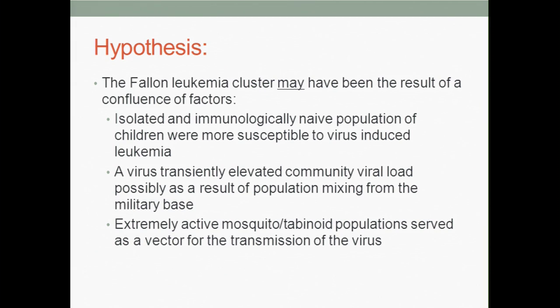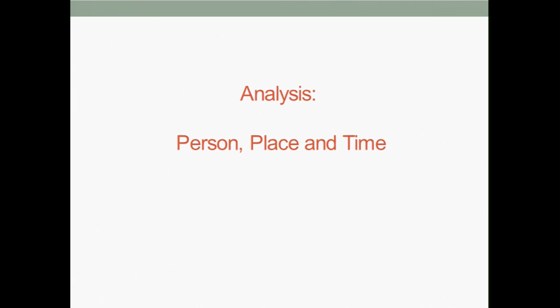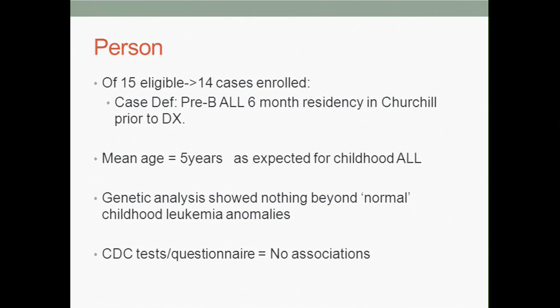This spawned a hypothesis: the Fallon leukemia cluster may have been a confluence of factors, where an isolated, immunologically naive population of children were more susceptible to a virus-induced leukemia, and a virus transiently elevated community viral load, possibly as a result of population mixing from the military base, and then an extremely active mosquito or tabanoid population served as a vector for transmission. Being good epidemiologists, I started with person, place, and time. Of those 17 cases, 15 were eligible under the CDC case definition of pre-B ALL and six months of residency in Churchill County prior to diagnosis. There was a mean age of five years, within the normal range for childhood ALL, and Dr. Wiemel's genetic analysis showed nothing beyond normal childhood leukemia anomalies.